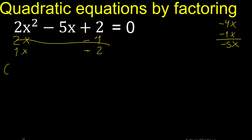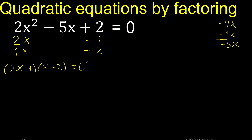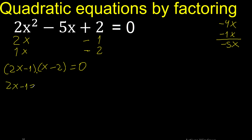Like this, here like this. 1 multiplied by x is x, minus 2, equal 0. Multiplication — therefore this factor equals 0, or this factor equals 0.